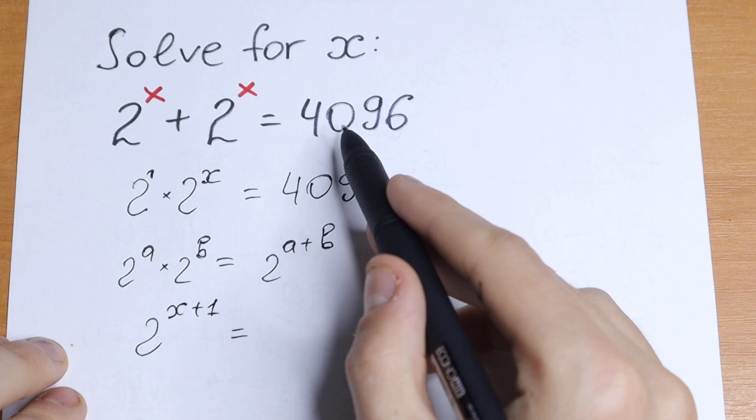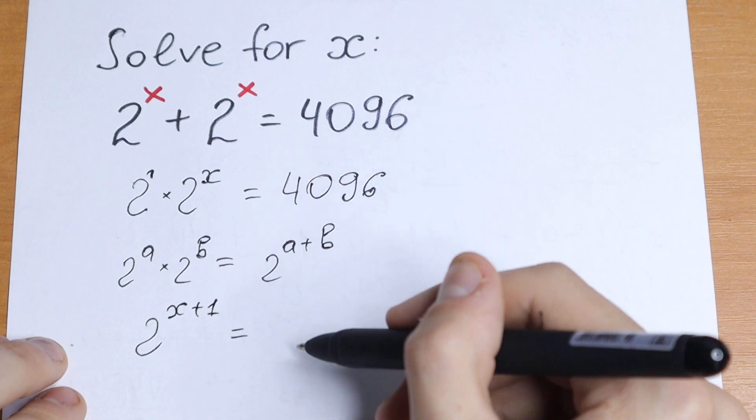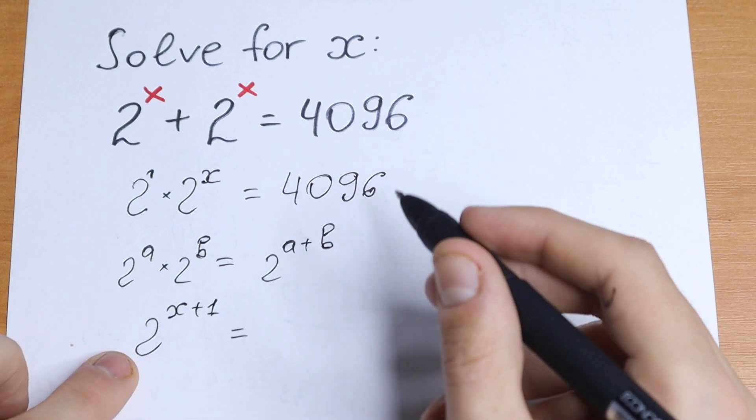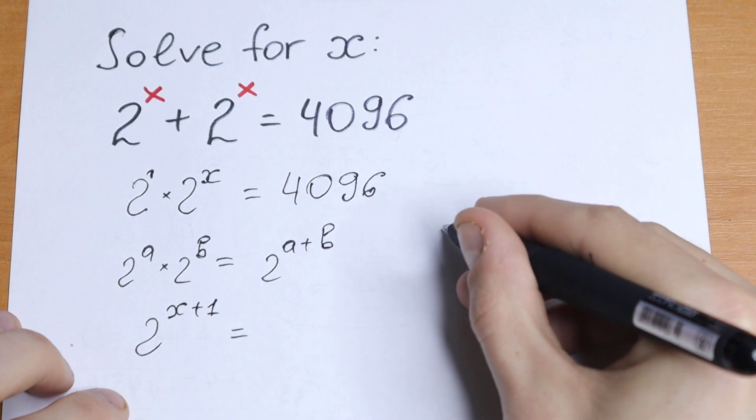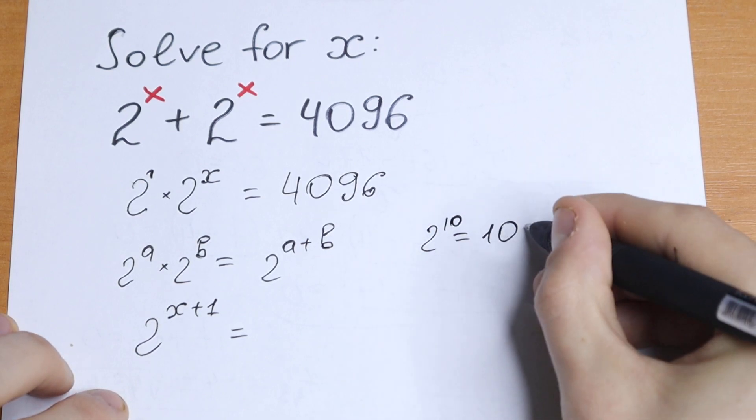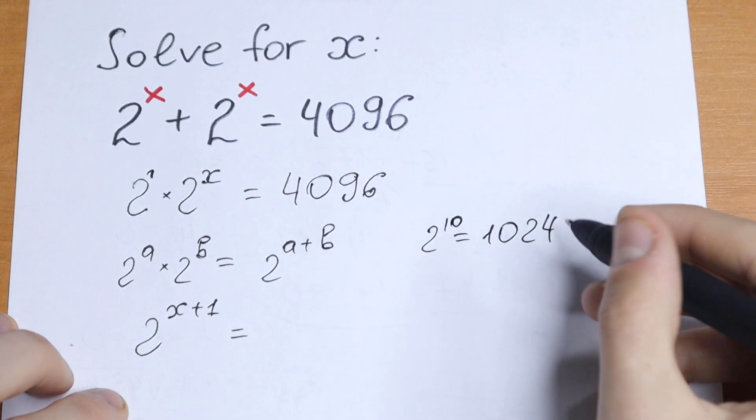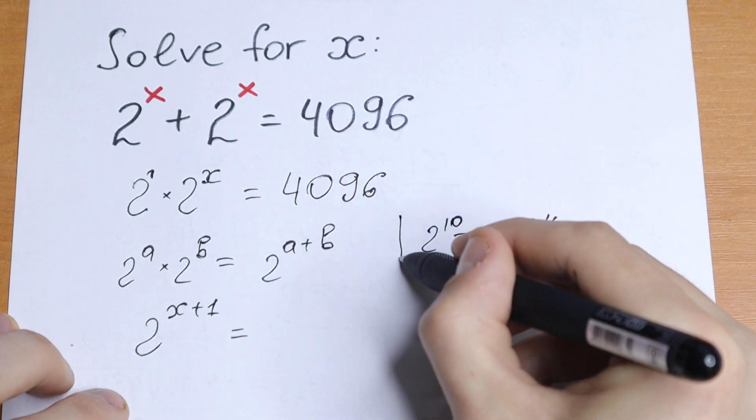This 4096 we can write using base of 2, because we know that, for example, 2 to the 10th power equals 1024. This is good to know, this is good to learn about this case.